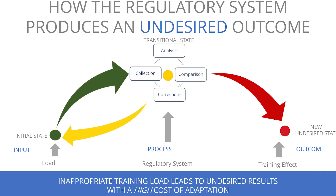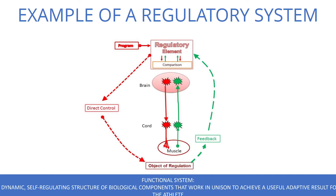The useful result is to deliver me from the initial state to a new achieved state. The next step is talking about the formation of a sport-specific training system — specifically, how the regulatory system tries to create a sport-specific system with minimum cost of adaptation. Let me use an example from neuromuscular physiology. This example involves the somatic system, not the autonomic nervous system — it is a completely different model — but this model can be applied to almost everything as a general concept of regulation.